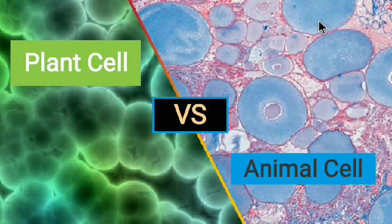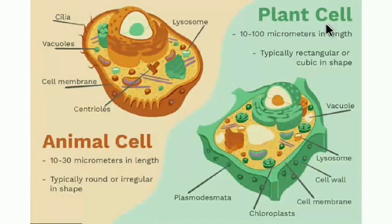Now let's see the differences between plant cell and animal cell. Plant cells are usually larger in size while animal cells are smaller. Plant cells have a rectangular or fixed shape, while animal cells are round or irregular in shape. Plant cells are composed of a cell wall made up of cellulose, while animal cells do not possess any cell wall.